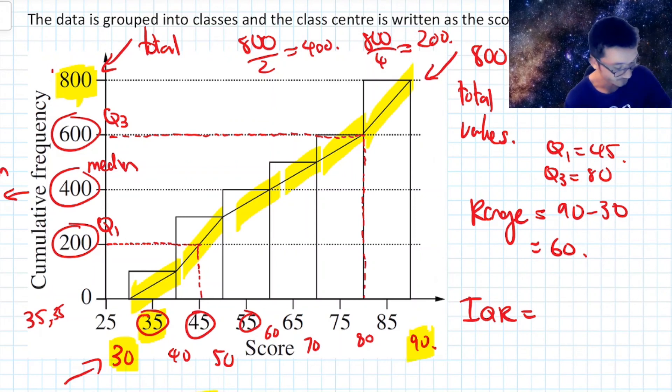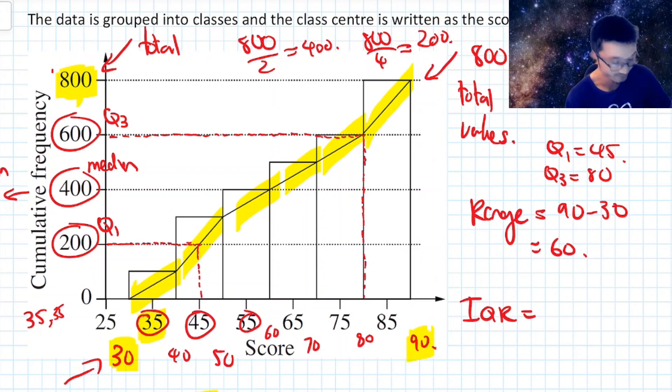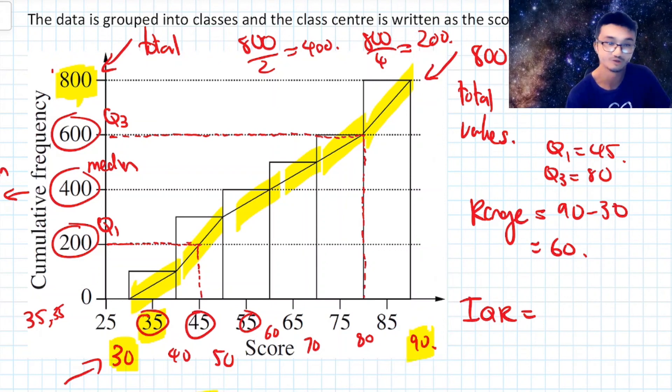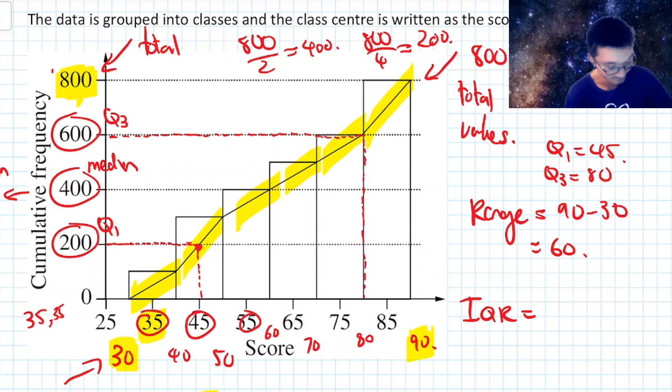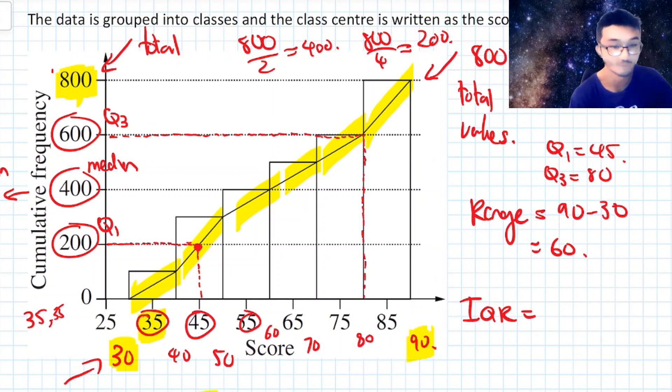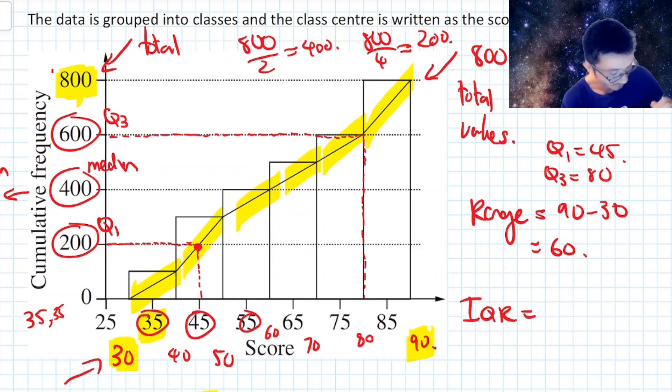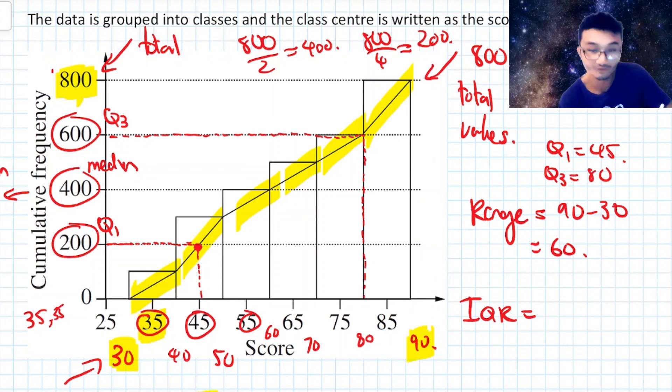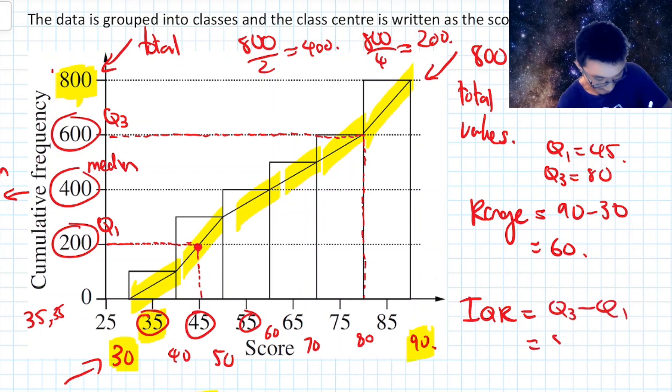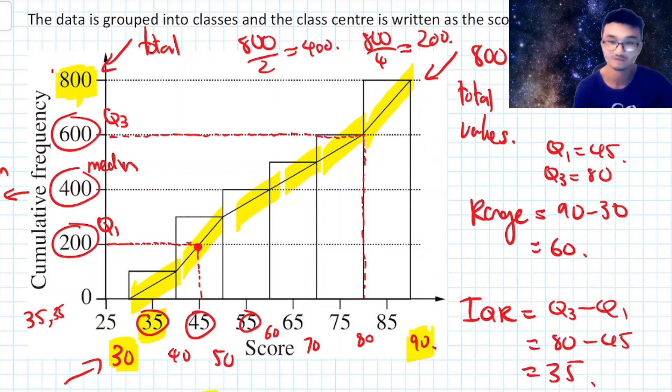So just to recap that, we find the Q1 and Q3 positions, then we construct a line all the way out until it touches that diagonal ogive that will be inside the cumulative frequency histogram. I've highlighted it for you so you can see it at this point here. And then we drop the line down to see what the score is actually going to be. And so in this case, the IQR is going to be 80, so Q3 minus Q1. So that's 80 minus 45. And that's going to be 35 is my interquartile range.